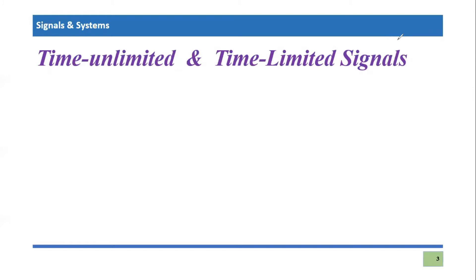This is another video tutorial of the Signals and Systems course. We have been discussing signals and their types, and we are going to discuss another important category of signal in terms of time: time unlimited and time limited signals. This category of signal is very important from the perspective of time domain and frequency domain, but right now we are just focusing on the time domain.